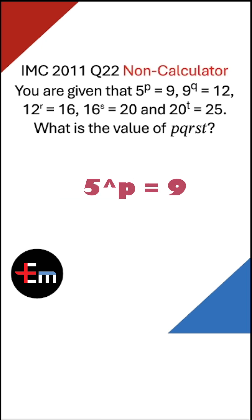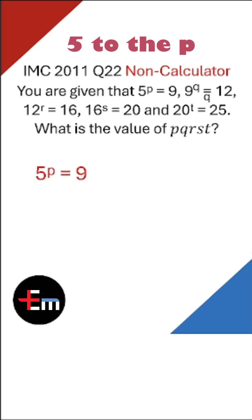5 to the p equals 9, 9 to the... Aha! If we know that 5 to the p is 9, we can substitute 5 to the p into 9. So 9 to the q is the same as 5 to the p to the q. And we know that is equal to 12.